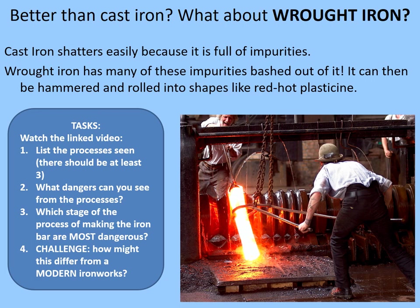There's another linked video in the description showing the rolling mill at Blists Hill, which is very close to where Abraham Darby had his blast furnace at Coalbrookdale. It's a living history museum where people take quite significant risks to keep the techniques of old ironworking alive for visitors to see. Watch the linked video, then: list the processes seen — there should be at least three; note what dangers you can see; decide which stage of making wrought iron would be most dangerous; and consider how this might differ from a modern ironworks.